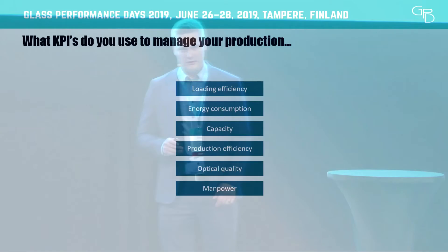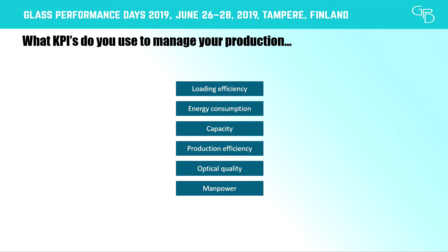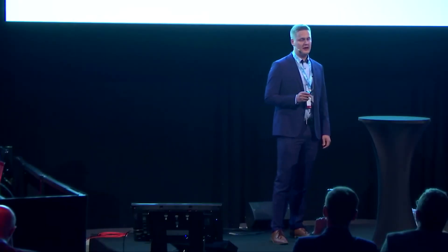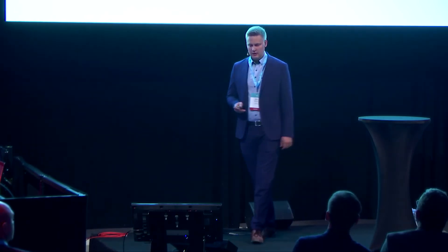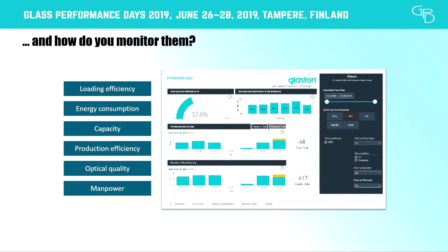Before Tarun comes to tell his view — all glass processors in the audience, think about how you are actually managing your production, what are the most important KPIs you are using, and most importantly, how do you actually monitor them. Do you have a system in place that can provide you this kind of information automatically, or is it a completely manual system you use to get at least some understanding of your production?